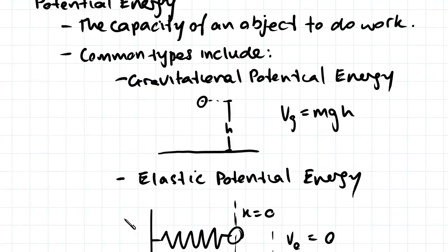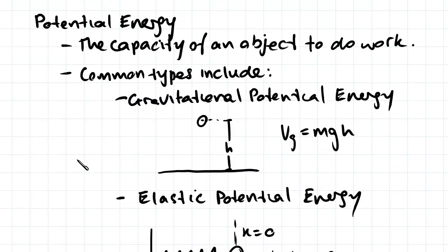Some formulas which describe gravitational potential energy. Gravitational potential energy, we call it VG. V with a subscript of G is equal to MGH, and M is the mass.